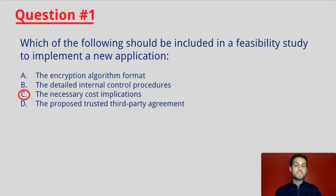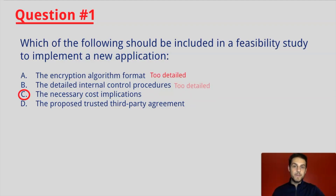If you selected C, you are correct. The answer is the necessary cost implications. Remember, a feasibility study or analysis typically includes general and necessary information. Choices A, B, and D are choices that would normally fit into a business case.